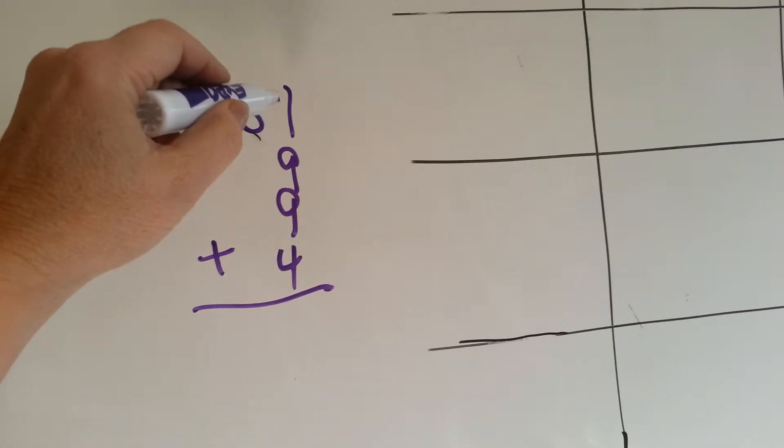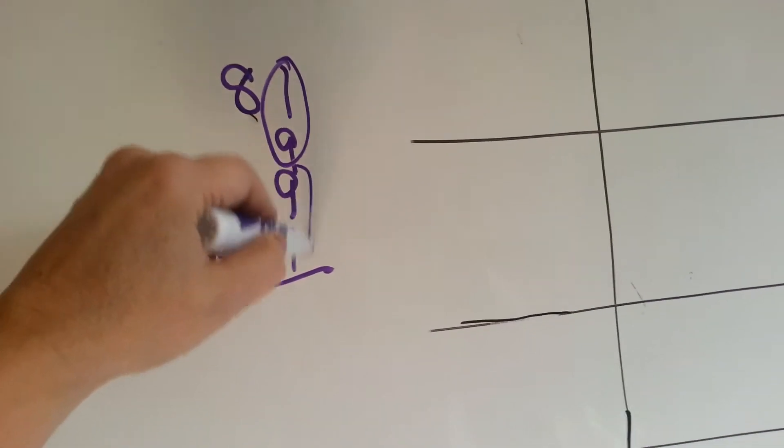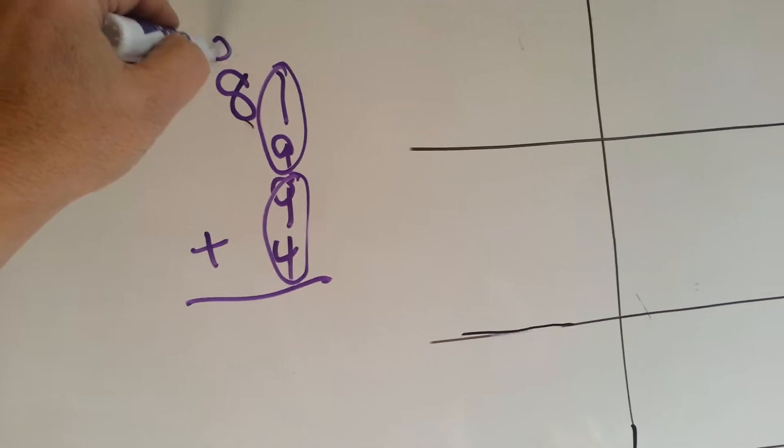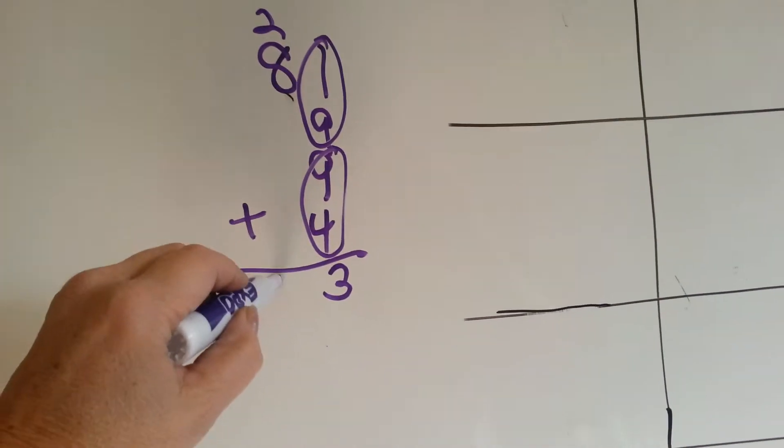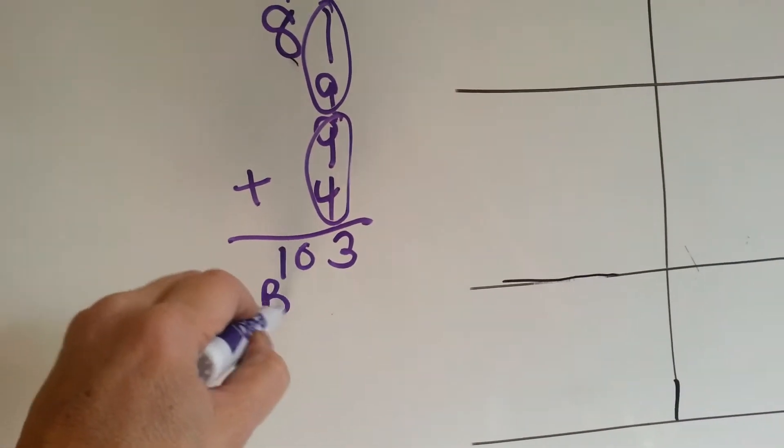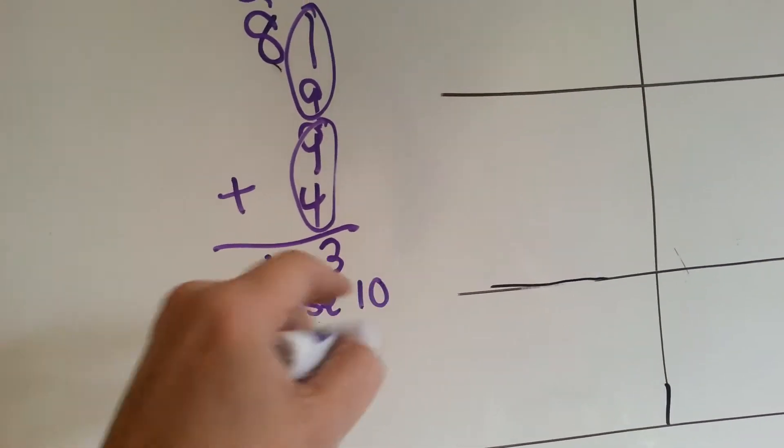What would this be to our base 10 value system? 10 and 13 is 23. 8 and 2 is 10. So in base 10, it would be 103.